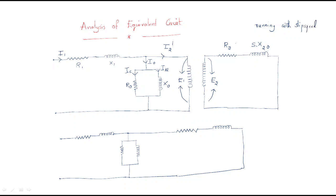So this is R1 and X1, and the supply voltage is V1. This is the complete equivalent circuit as we have already discussed. However, if you observe, the stator winding circuit and the rotor winding circuit are separate circuits. That's why we should combine them together and convert into a single circuit.